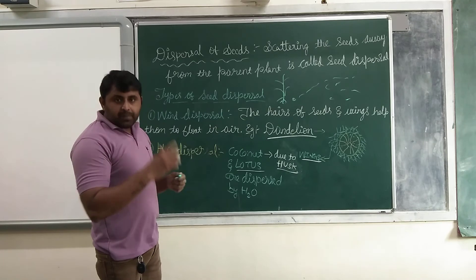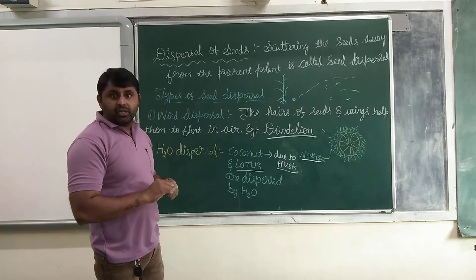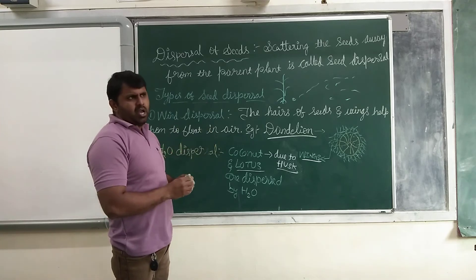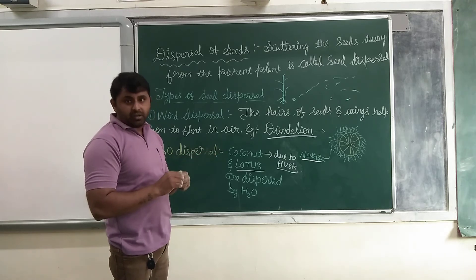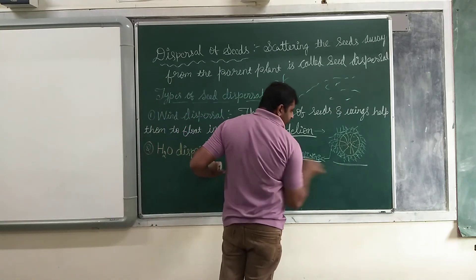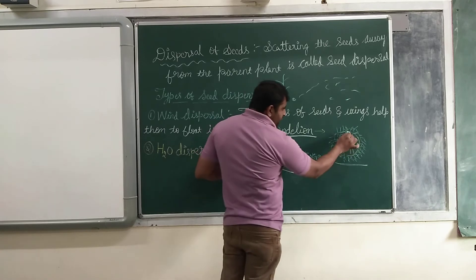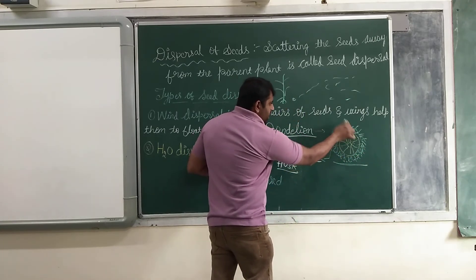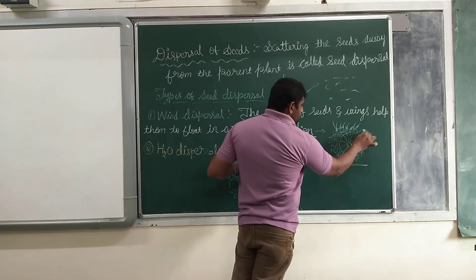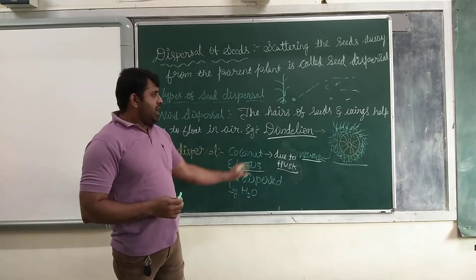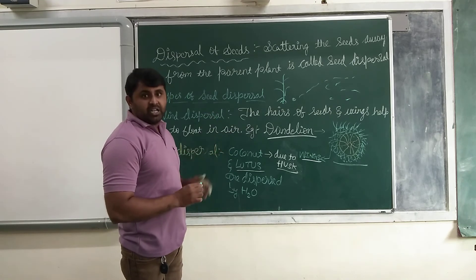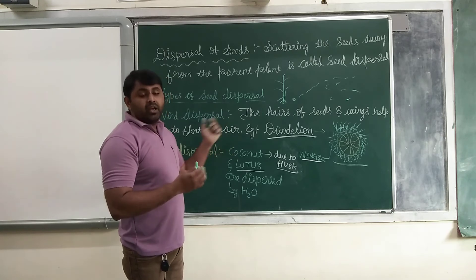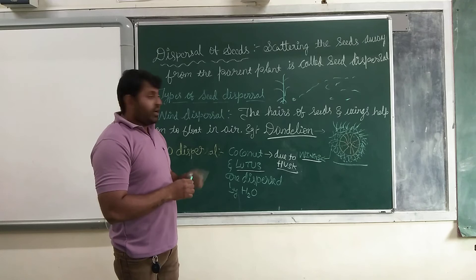An example is dandelion. Dandelion seeds are commonly available in South Africa and America, and also in India. The dandelion seed has a haze on its outer layer. Due to the haze, the seed gets dispersed easily in the wind.